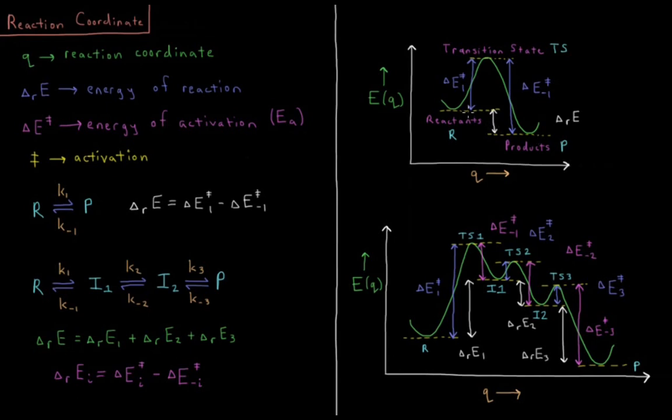But what we're interested in kinetics is often the energy of activation. So what I've got here is delta E of activation 1, which is this difference in energy going from the reactants to the transition state. So E TS minus E of R.